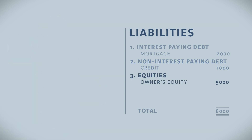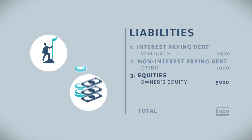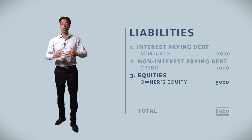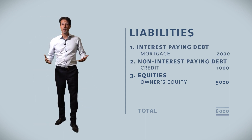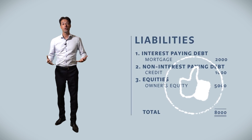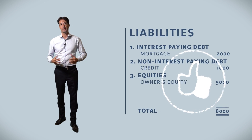The final category is equity. In our case, we invested 5000 of our own savings money to get the business started. This is what we call owner's equity. The total size of the liabilities is 8000. And this is how you read a balance sheet.